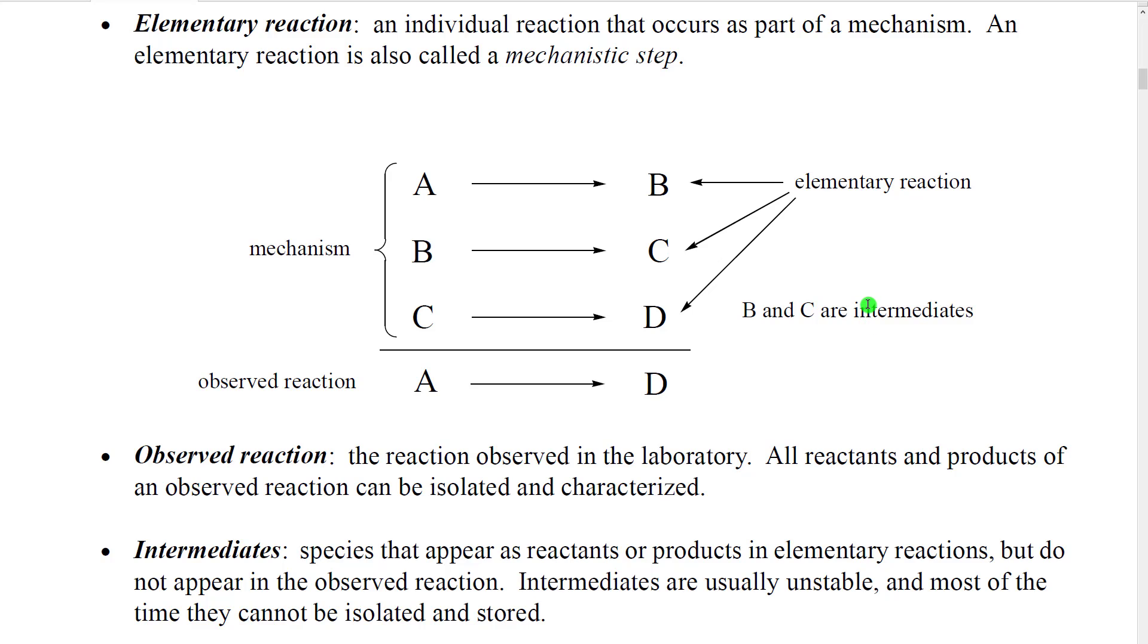Intermediates are usually unstable. Most of the time we can't even isolate them to study them. So we know about them because of indirect information. And we're going to talk about that in a little bit, how we get information about what the intermediates are in a reaction.